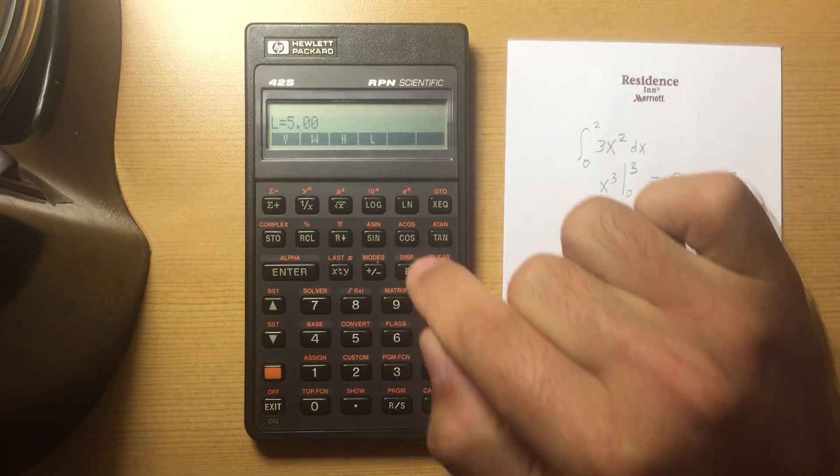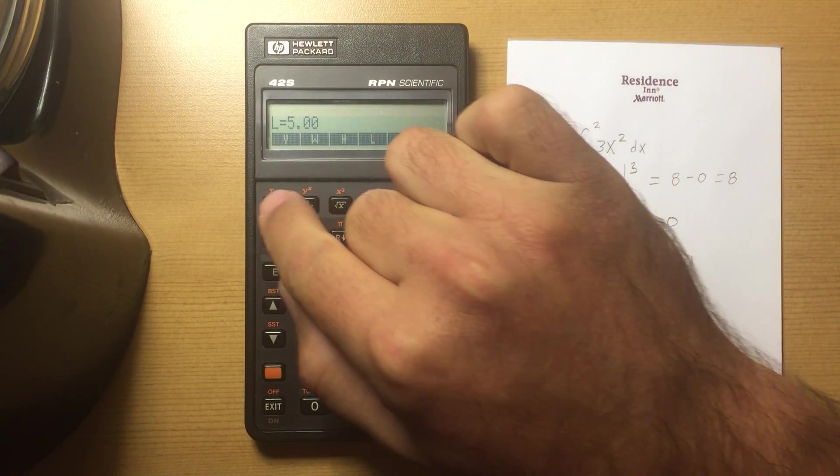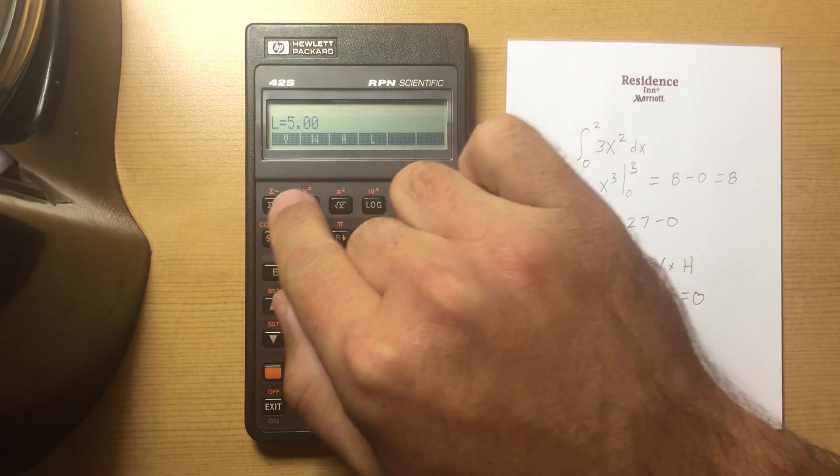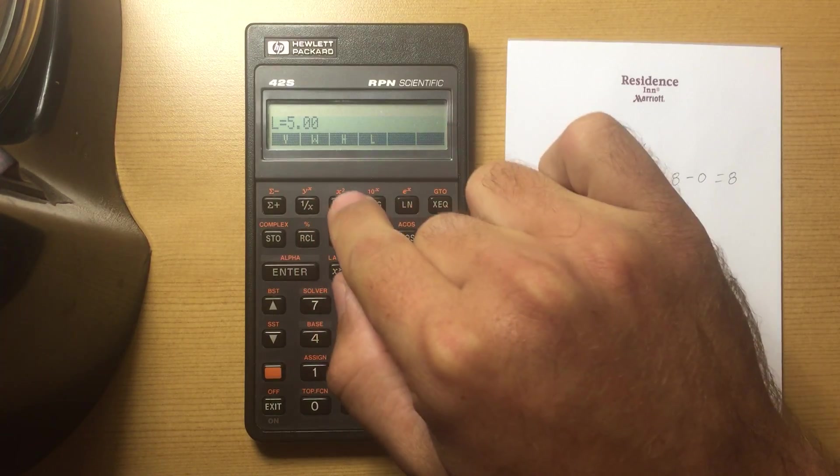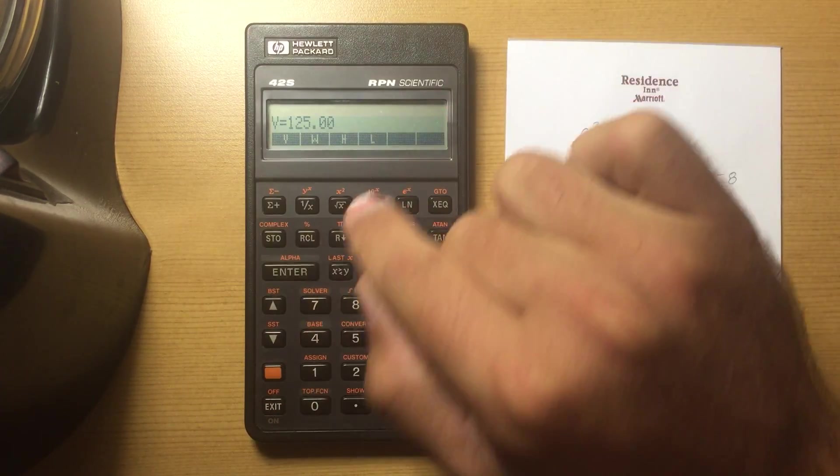Now if I hit any one of these buttons it will solve for that variable. I'm going to solve for volume given that I have 5 in each one of these, and it found volume is 125.